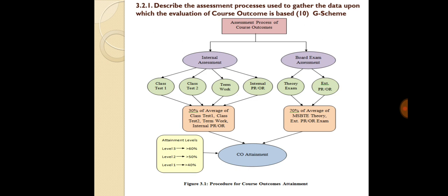If the student or learner has more than 40%, he is in level 1. If he has more than 50%, he is in level 2. If he has more than 60%, he is in level 3.